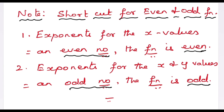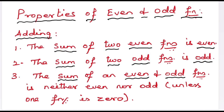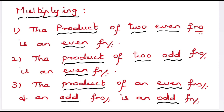Note some tips to find out whether a function is even or odd. Analyze the exponents in the equation. If the exponents for the x values are even numbers, then the function is even. If the exponents for the x and y values are odd numbers, then the function is odd. Some properties: the sum of two even functions is even; the sum of two odd functions is odd; the sum of an even and an odd function is neither even nor odd. The product of two even functions is even; the product of two odd functions is even; the product of an even and an odd function is odd.